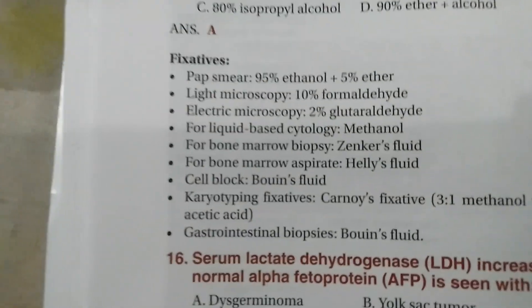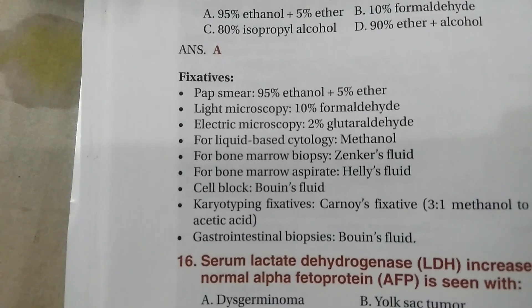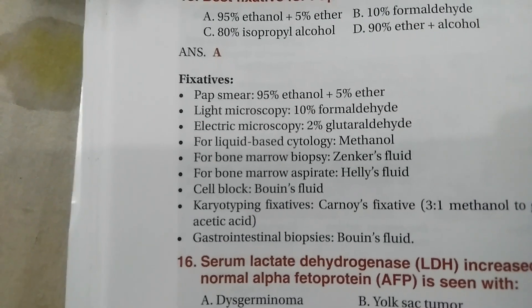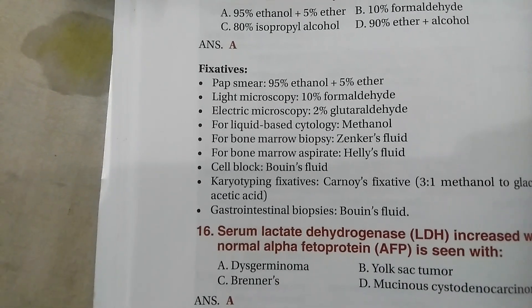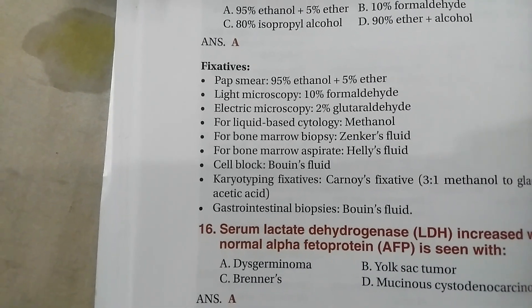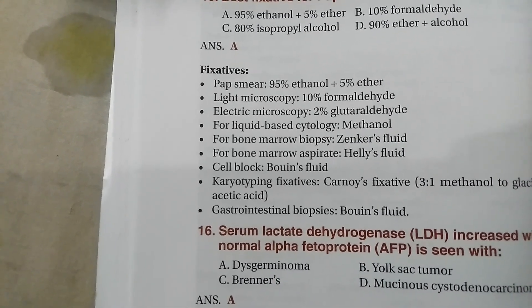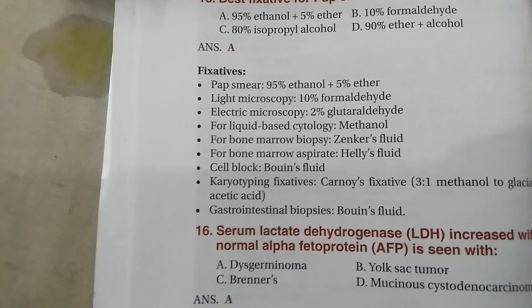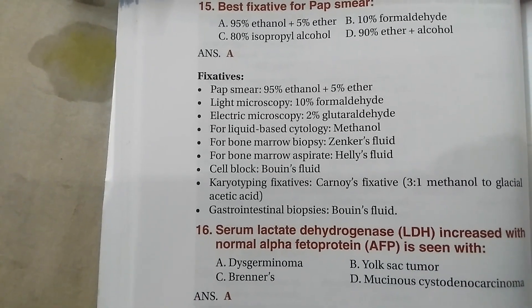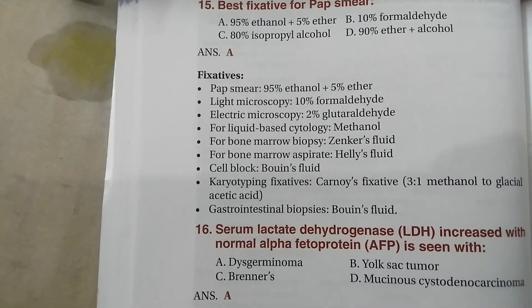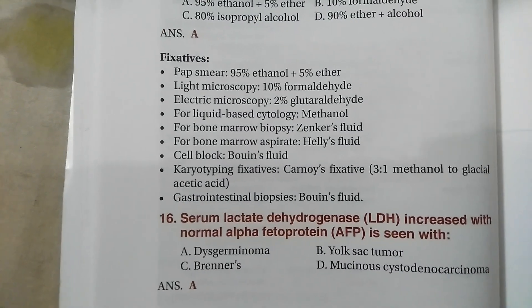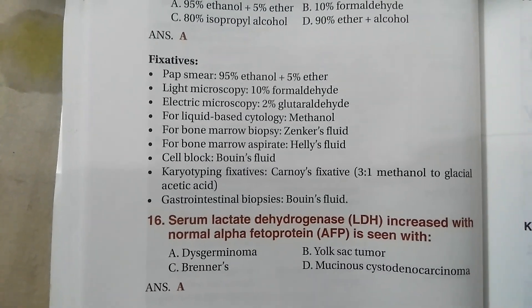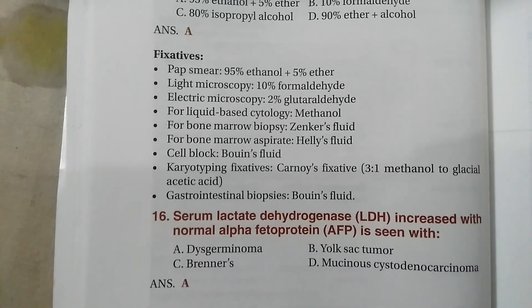Here is the complete list: pap smear uses 95% ethanol plus 5% ether; light microscopy uses 10% formaldehyde; electron microscopy uses 2% glutaraldehyde; liquid cytology uses methanol; bone marrow biopsy uses Zenker's fluid; bone marrow aspirate uses Helly's fluid; cell block uses Bouin's fluid; karyotyping uses Carnoy's fixative, which is a 3:1 ratio of methanol to glacial acetic acid; and gastrointestinal biopsies also use Bouin's fluid.